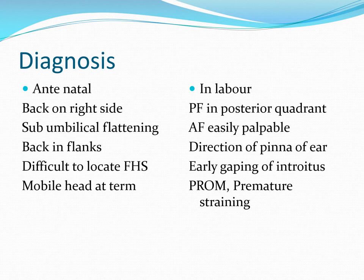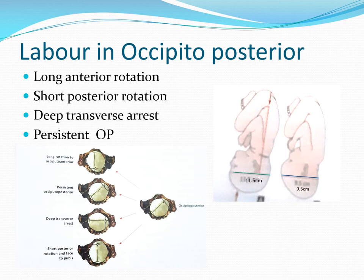Premature rupture of membrane, the tendency to premature straining due to the occiput pressing on the rectum, and early gaping of the introitus are features of occipito-posterior position. The cardinal movements in the mechanism of labor are engagement, descent, flexion, internal rotation, extension, restitution, and external rotation.